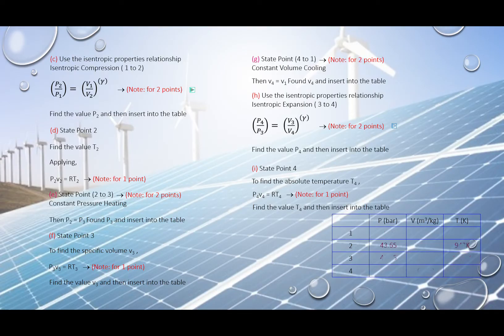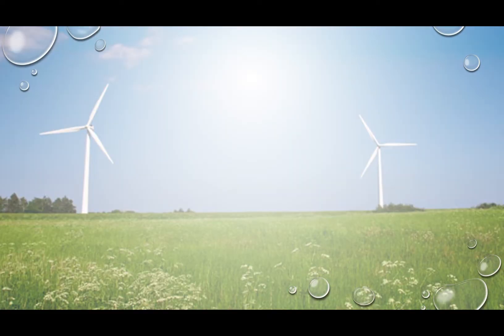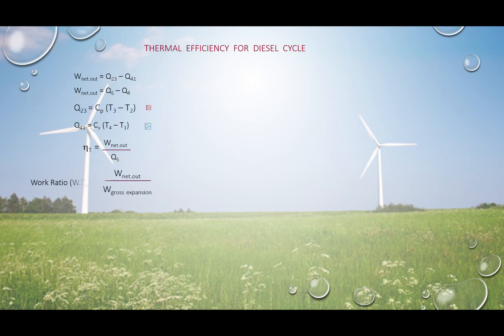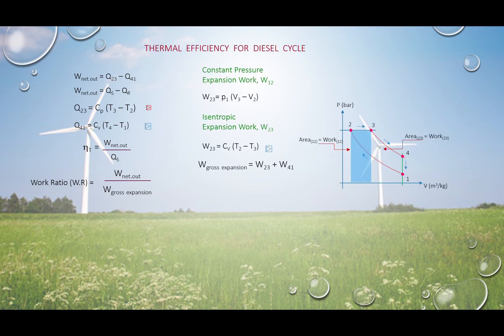Once all values are in the table, calculate thermal efficiency. Identify heat supply (two-to-three, constant pressure process) and heat rejected (four-to-one, constant volume process), then find net work output. Refer back to the TS diagram and the table as needed to solve all the required values. That's all — thank you.